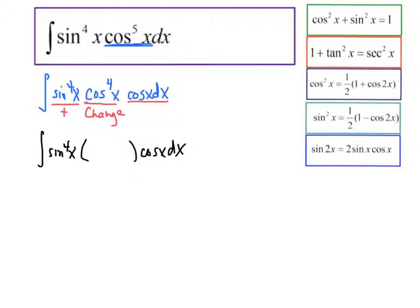Now, cosine squared would be using this identity up here. Cosine squared is 1 minus sine squared. Well, this is cosine to the fourth. Well, that's not a big deal. It's just 1 minus sine squared squared. So we just replaced the cosine to the fourth with a cosine squared squared.